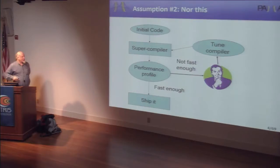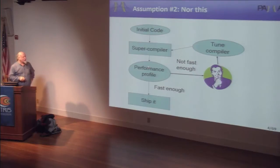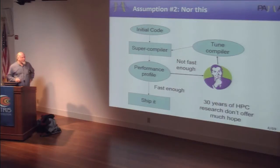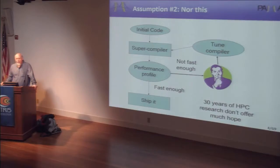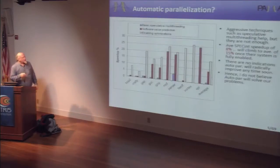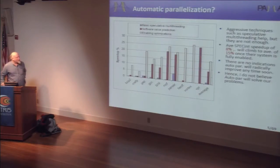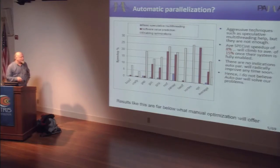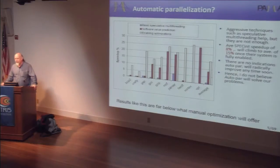One alternative is the super-compiler solution: take that same code, have a super compiler automatically parallelize it, and if it doesn't go fast enough, tune up the compiler. The problem, as Tim Mattson has noted, is that 30 years of research on high-performance computing don't offer much hope here. Automatic compilation techniques often get maybe a 20% speedup, but relative to what you can do by hand, that leaves a lot of performance on the table.